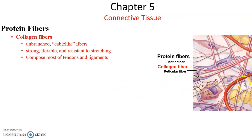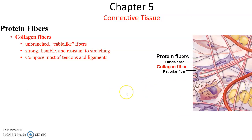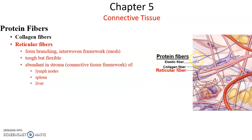There are protein fibers in the extracellular matrix of most connective tissues. There are three types. Collagen fibers are unbranched, thick, cable-like protein fibers — strong and flexible. They can resist stretching and resist forces. They are made up of collagen protein and make up the bulk of tendons and ligaments. Reticular fibers are much thinner; they are interwoven and branch a lot, forming meshes or frameworks inside structures. They're tough but flexible, found in places like the inside of lymph nodes, spleen, and liver. It turns out they are also made of collagen proteins.